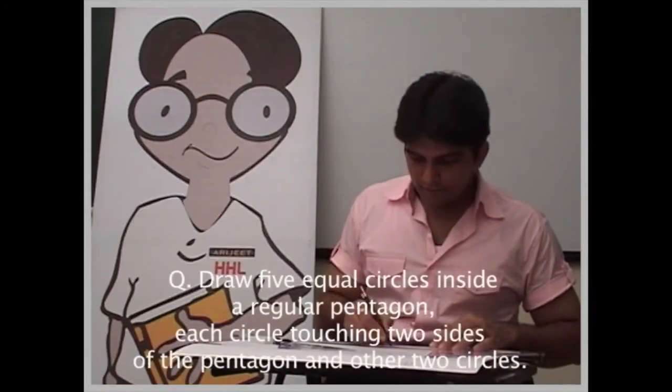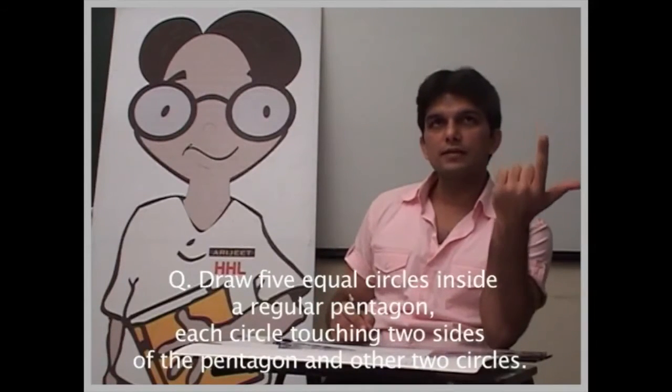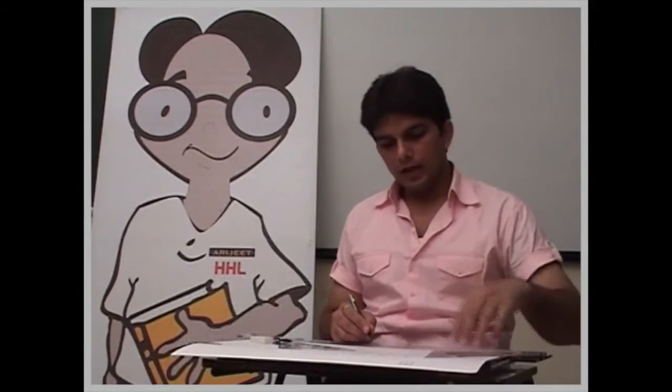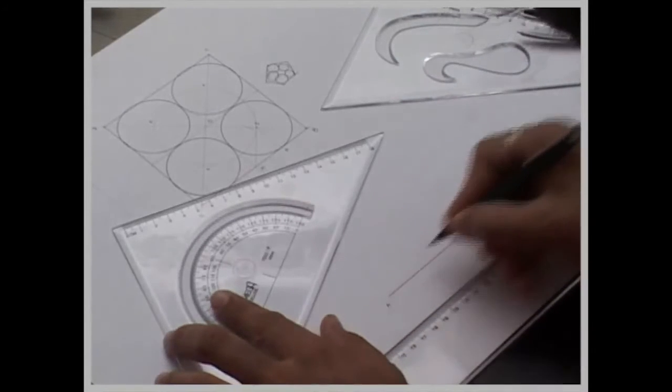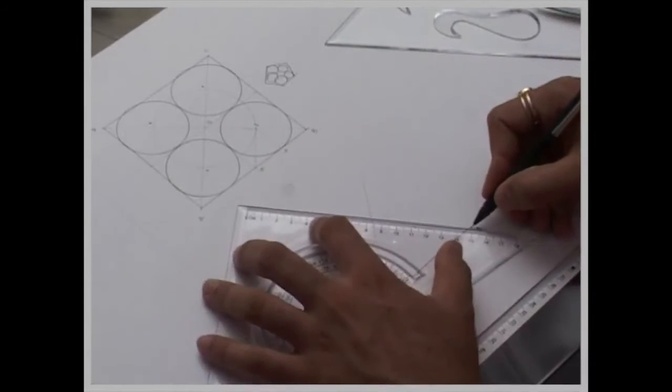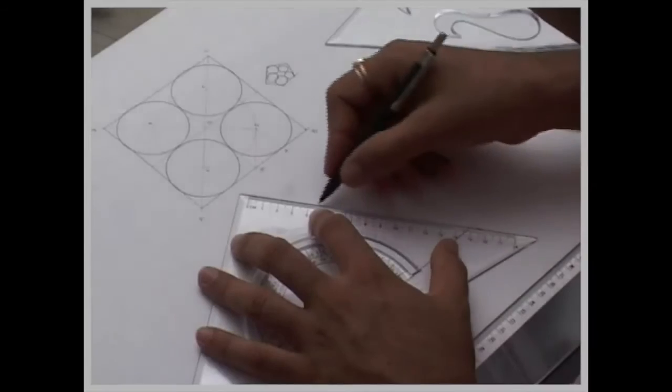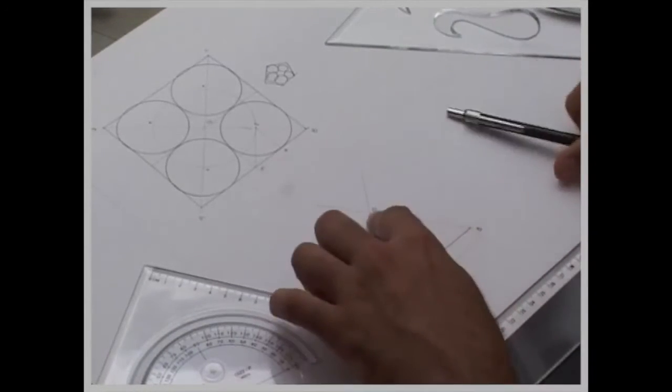now see for pentagon we have various methods, like first what we have seen was a general method, then we have seen 72 degree method, now I will show you 54 degree method, in 54 degree method, what you have to do, you have to take an angle 54, from A and from B also, you take an angle 54, extend, wherever they intersect, that is point O,